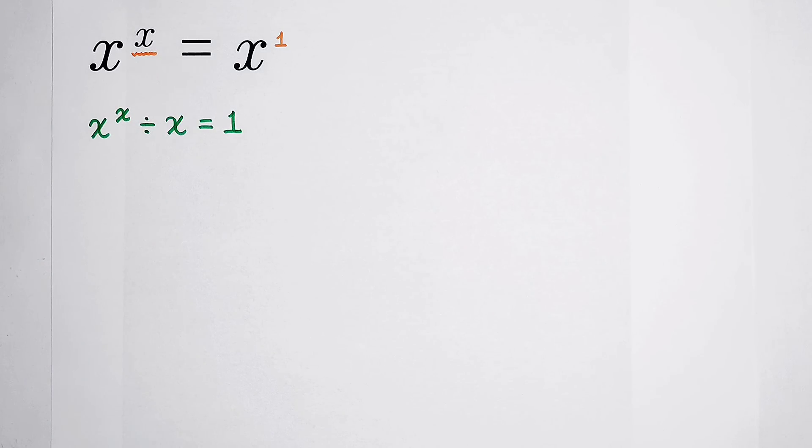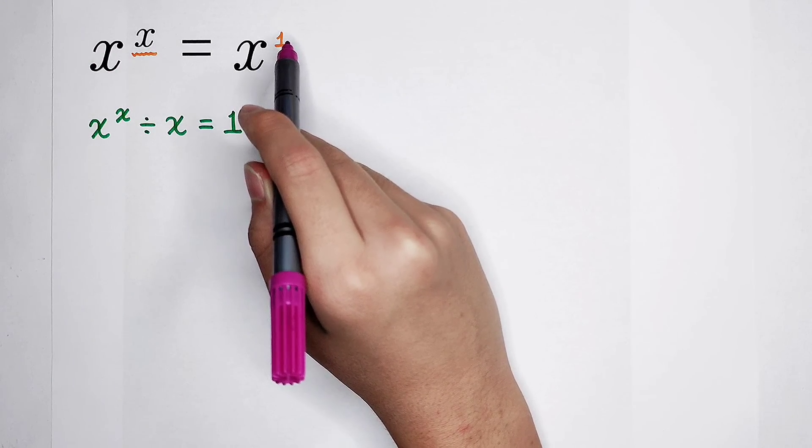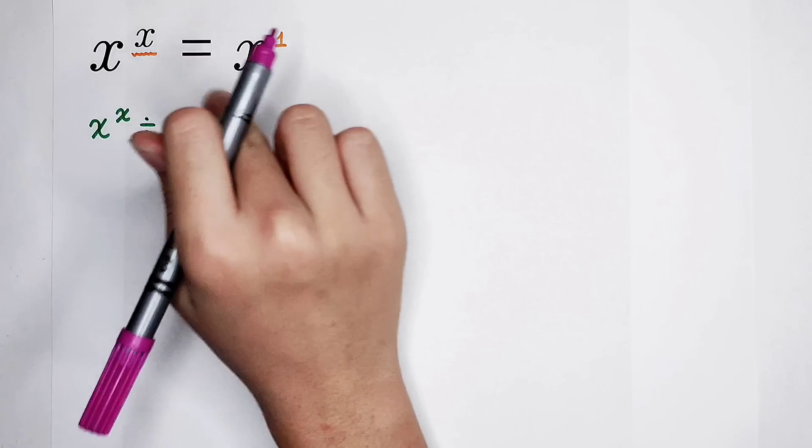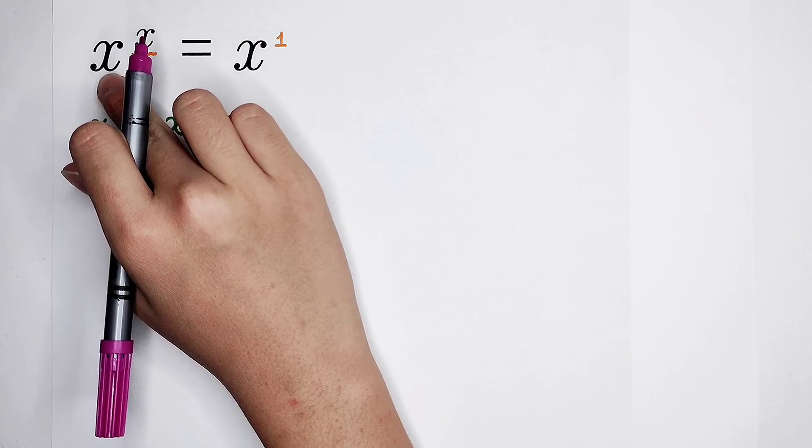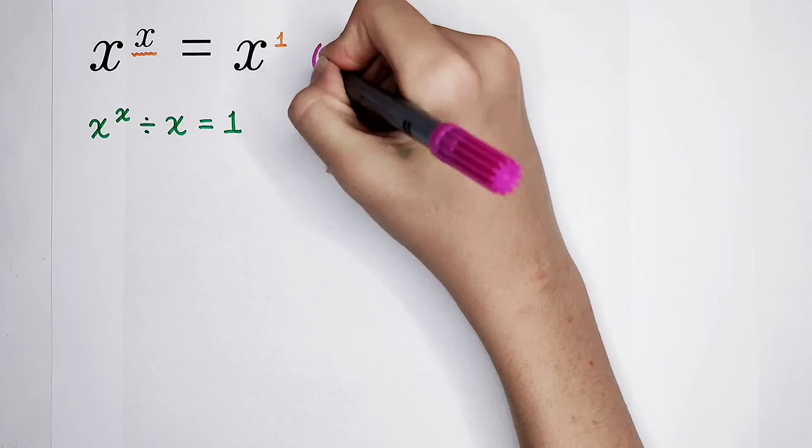Now the question becomes, can x be equal to 0? No, it cannot. When x is equal to 0, then what should appear? 0 raised to the power of 0 is equal to 0. It's not right. So x cannot be 0.